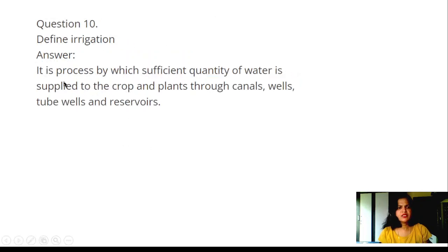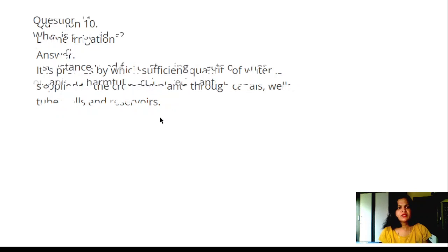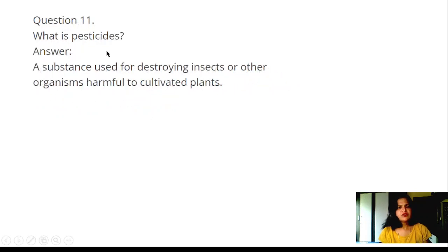Question 10: Define irrigation. Answer: It is the process by which sufficient quantity of water is supplied to crops and plants through canals, wells, tube wells, and reservoirs.